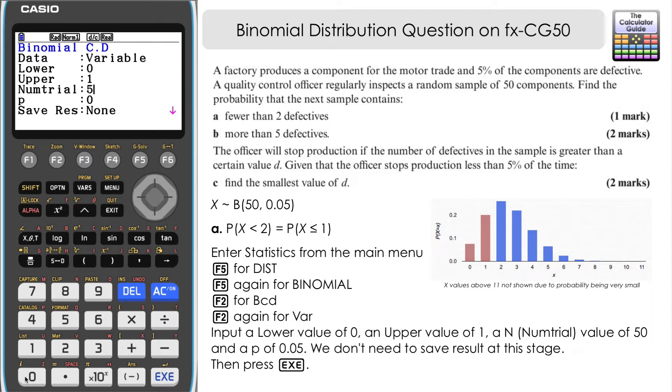And the number of trials, well, that is our N value. That's the number in the sample. So that's 50 components. And our probability here is 0.05. The last option there refers to if we need to save the result. We're not particularly interested in that at this stage. So if we just press equals, here we have our probability for part A, 0.2794 to four decimal places.